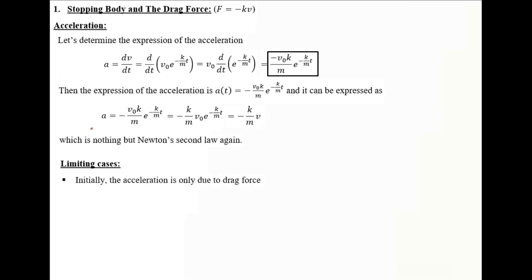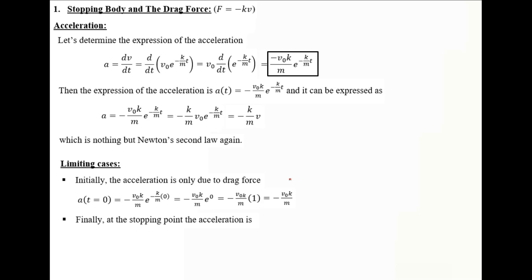Now let's check the limiting cases for acceleration. Initially, at T equals 0, replacing T by 0 gives e to the power 0, so the initial acceleration is minus V0 times K divided by M. At the stopping point, T tends to infinity, giving e to the power minus infinity, which equals 0. So indeed at the stopping point, the acceleration is 0 and the block will stop.